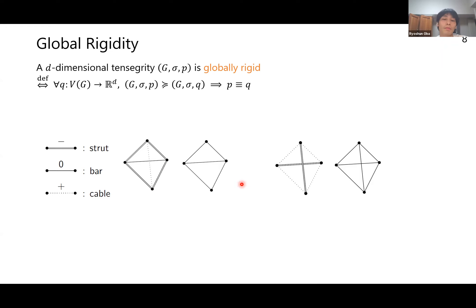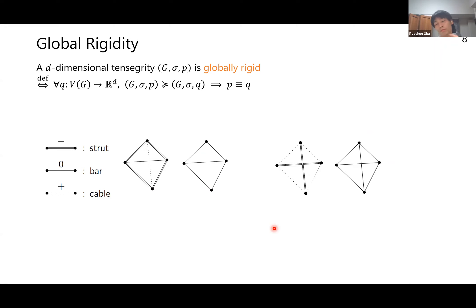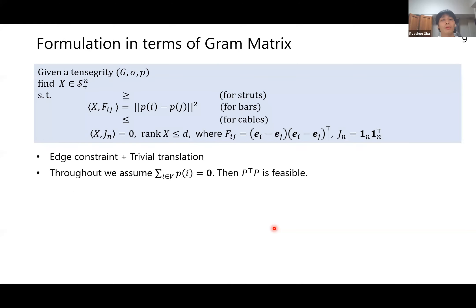A D-dimensional tensegrity is called globally rigid if for any D-dimensional point configuration Q dominated by G,σ,P, Q must be a congruent image of P. For example, one tensegrity dominating another that is not congruent shows it is not globally rigid. You can also flip an upper vertex down, showing non-global-rigidity. The right two tensegrities and frameworks shown are globally rigid.